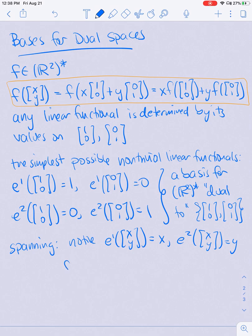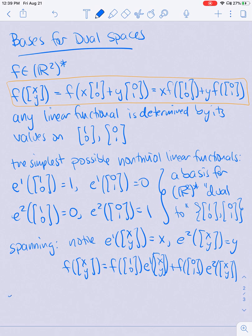So then what we get by rewriting this orange equation is that F of (X, Y) is equal to F of (1, 0) times E¹ of (X, Y). And this is enough to show that E¹ and E² span R² star because any other element of R² star can be written as a linear combination of E¹ and E². So I'll leave as an exercise to check that E¹ and E² are linearly independent.